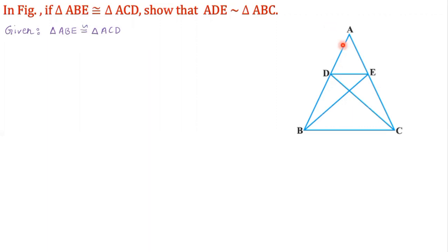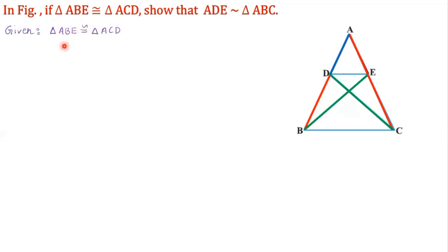Observe the figure. From triangle ABE congruent to triangle ACD, the corresponding parts are: AB is equal to AC, BE is equal to CD, and AE is equal to AD. Also, angle ABE is equal to angle ACD, angle ABE is equal to angle CDA, and angle EAB is equal to angle DAC.